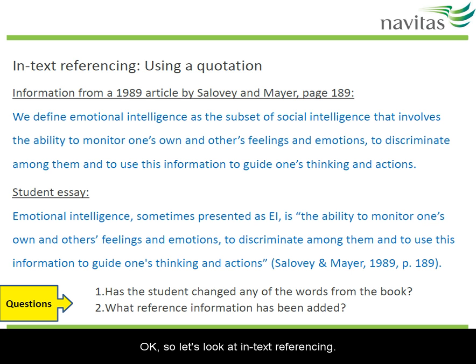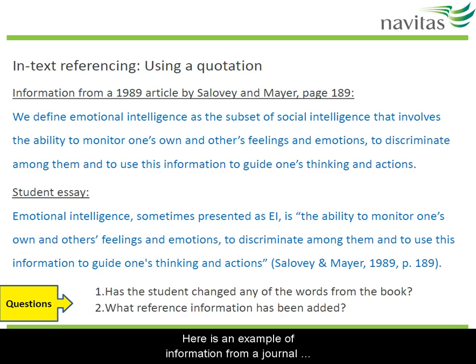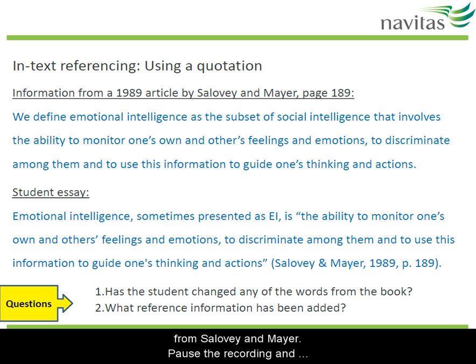So let's look at in-text referencing. That just means the referencing we do in the assignment proper, not the reference list which comes at the end. Here's an example of information from a journal article about emotional intelligence by Silovian Meyer. Below is a section from a student's essay where they have used the information from Silovian Meyer. Pause the recording and think about these questions.